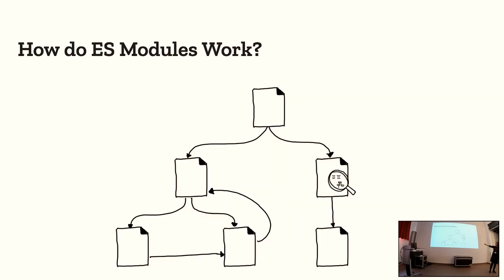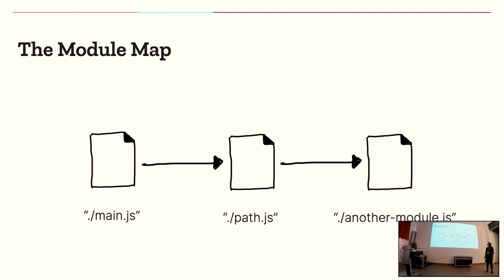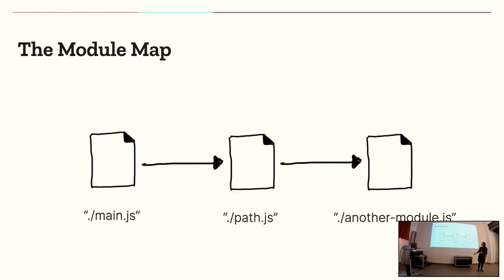In context, this is called the fetch-parse loop — we continuously run through this loop. Let's look at a concrete example. We have a structure of three files: main.js as our entry point, then path.js, then another module.js — a linear graph. Main.js has not been fetched or loaded or linked. This is your script tag with type module and a URL. So we say we need to get main.js, change the state to fetching, fetch the file, and update the state.